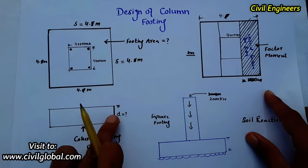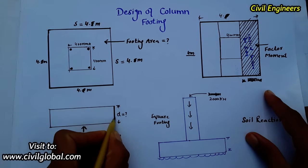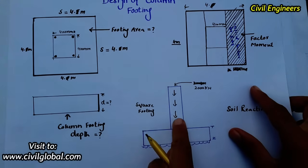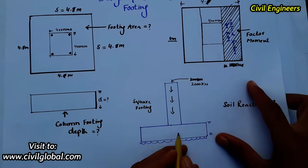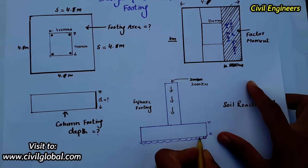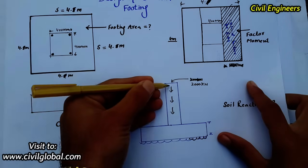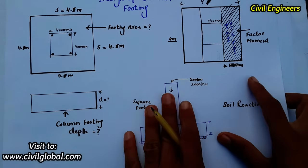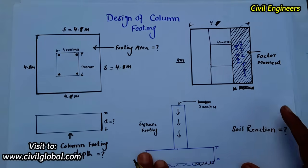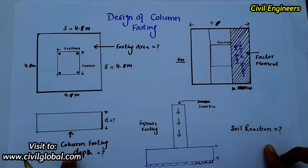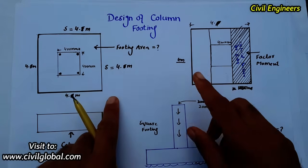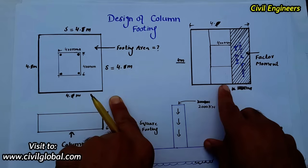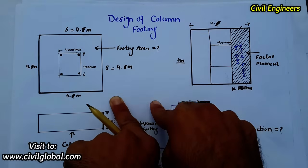This is the column and this is the footing, and we need to determine the depth of the footing. This is part one of the video — in part two I will show you how to design the steel and quantity of steel for this column footing. The column size is 200 mm by 200 mm.